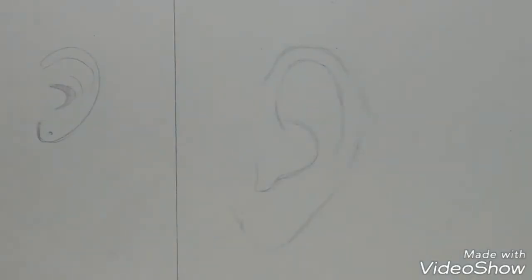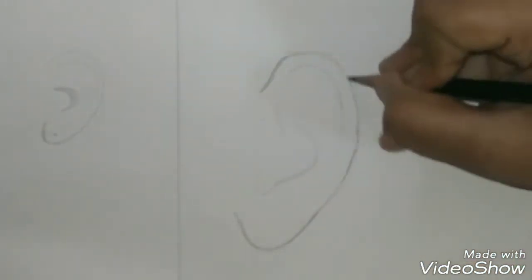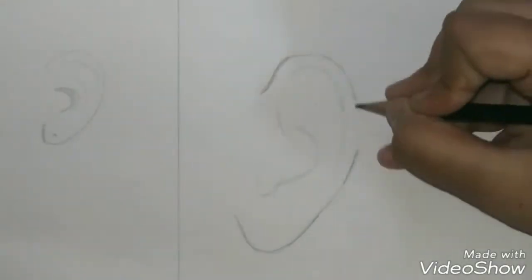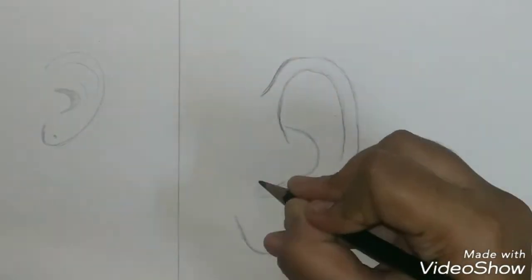Make sure you leave a good amount of space at the bottom of the earlobe. Guess what, we're almost done. You can leave it like this and start with your shading, or you can go ahead and draw a few more lines to make it look more realistic.